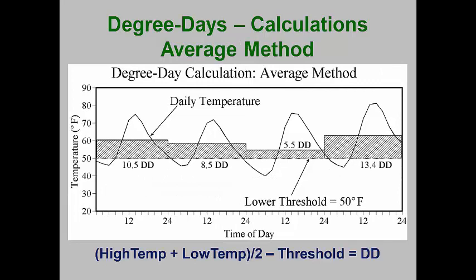A crude way to measure the amount of development that an organism undergoes is the average method. One adds the low temperature for the day to the high temperature and divides by two — that gives you the average temperature for that day. You then subtract the threshold, and this gives you the average amount of heat units that the organism was subjected to and was actively metabolizing. For each day, these heat units are added up, giving you the cumulative heat units or cumulative degree days. When the average is below the threshold, no degree days are accumulated for that day. Most models have a calendar start date from which degree days are accumulated — for most insects, that would be around March 1st.